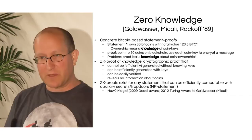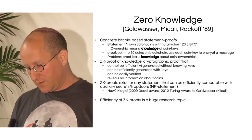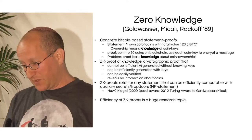Zero-knowledge proofs theoretically exist for any statement that can be efficiently computed, even if it includes auxiliary hidden trapdoors and passwords — these are known as NP statements. This work was awarded the 2012 Gödel Award in computer science, and the Turing Award also went to Shafi Goldwasser and Silvio Micali for inventing this concept. Getting zero knowledge to be efficient has been an open problem for general systems for something like 30 years.